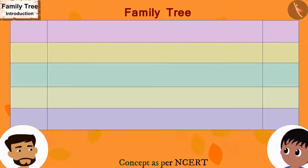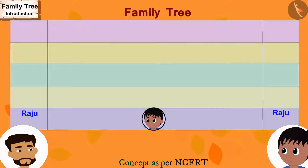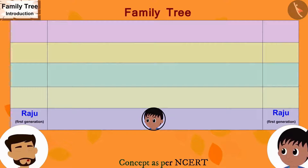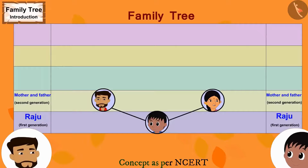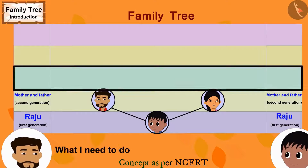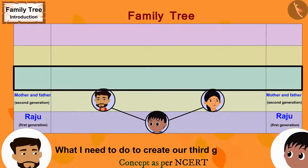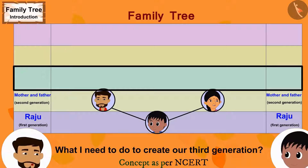The father begins explaining: first, he writes Raju's name, which forms the first generation. Then he draws two lines above Raju's name and writes his mother's name and his own name — they are both in the second generation of the family. The father then asks Raju if he can figure out what needs to be done to create the third generation.